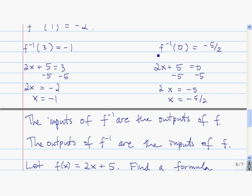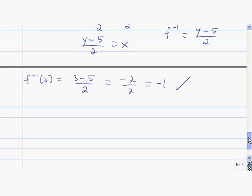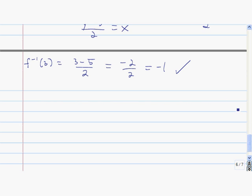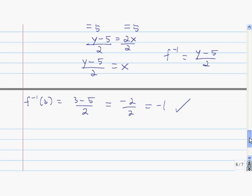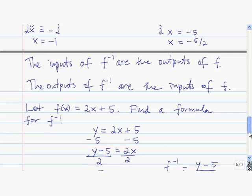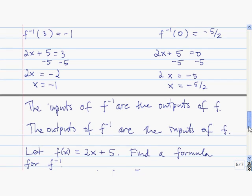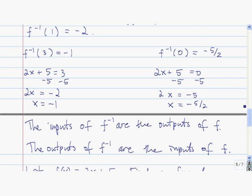Similarly, to find f inverse of 0, we take that value 0 and plug it in for y. So we have 0 minus 5, which is negative 5, divided by 2. So that is precisely what we got by solving that equation.